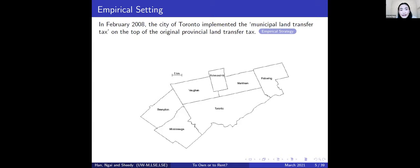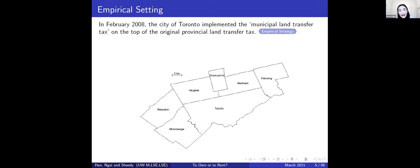In February 2008, the City of Toronto suddenly implemented an additional land transfer tax on top of the existing provincial tax. This was largely unanticipated — previous papers treat it as such. We use a difference-in-differences design comparing neighborhoods within Toronto to those just outside the Toronto border, before and after the tax, to identify the effects.